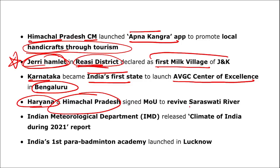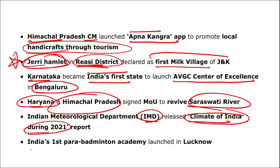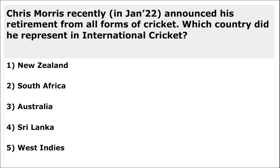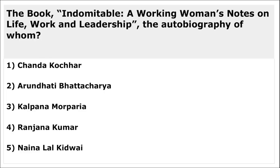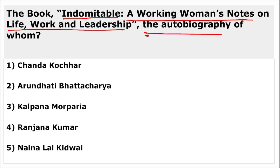IMD released the Climate of India Report 2021. India's first Para Badminton Academy was launched in Lucknow, Uttar Pradesh. Chris Morris announced retirement from all forms of cricket — he represents South Africa. The book 'Indomitable: A Working Woman's Notes on Life, Work and Leadership' is an autobiography of Arundhati Bhattacharya, to be published by HarperCollins India.